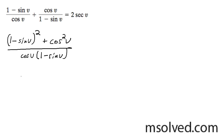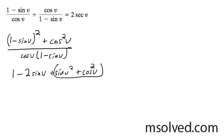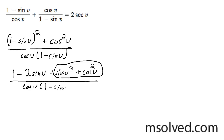And I'm going to go ahead and FOIL out what's inside the parentheses. I get 1 minus 2 sine v plus sine v squared plus cosine v squared. These turn out to be 1. So let me just rewrite this real quick: cosine v, 1 minus sine v. Bringing this down, I get 2 minus 2 sine v.